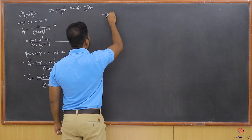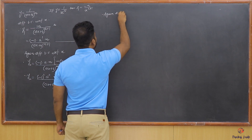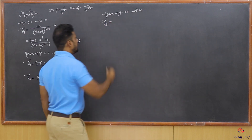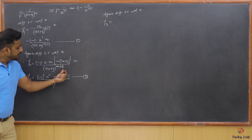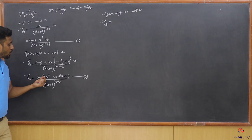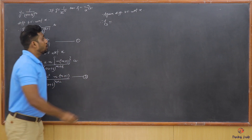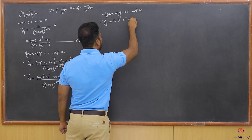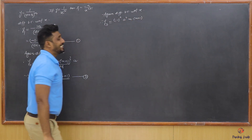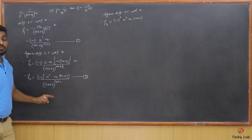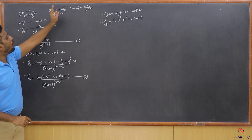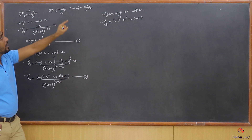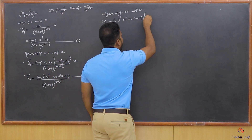Differentiating both sides again with respect to x, we get y3, the third order derivative. All terms in the numerator — (-1)^2, a^2, m, (m+1) — are constants and remain as is. We again have 1/(ax+b)^(m+2), which looks like 1/x^n. So the derivative gives a negative sign and the power m+2 in the numerator.